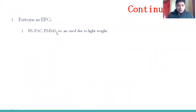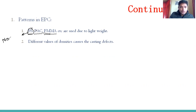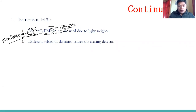Starting with the pattern in EPC: as discussed in the last video, we use polystyrene (PS), polyacrylene, alkaline carbonate, and PMMA. Among these, polystyrene is used for non-ferrous materials — when casting non-ferrous materials, the pattern is made of PS — while for ferrous materials, patterns are made of PSE and PMMA. One key reason we use these materials is that they are lightweight.